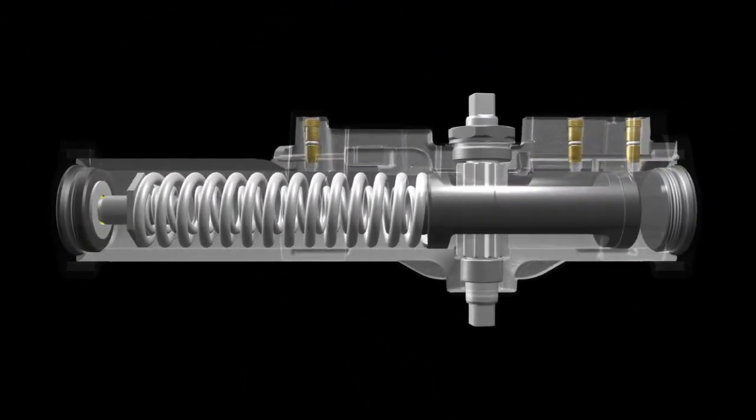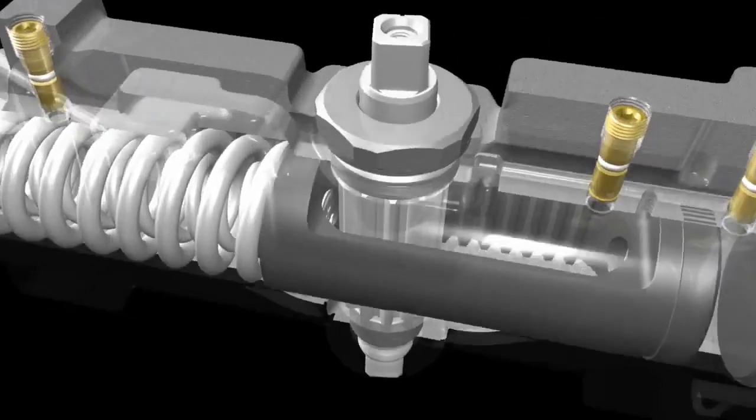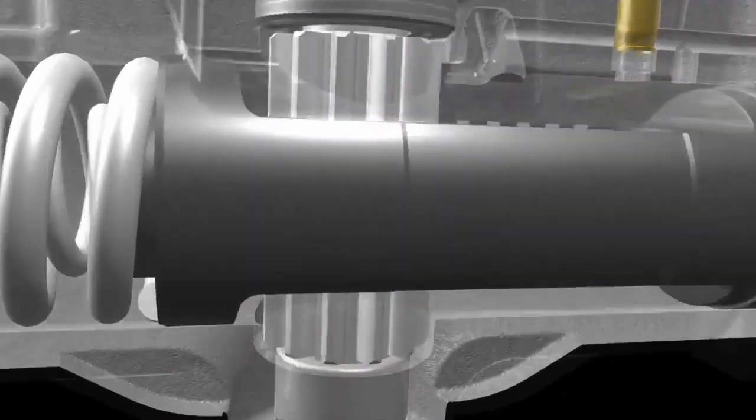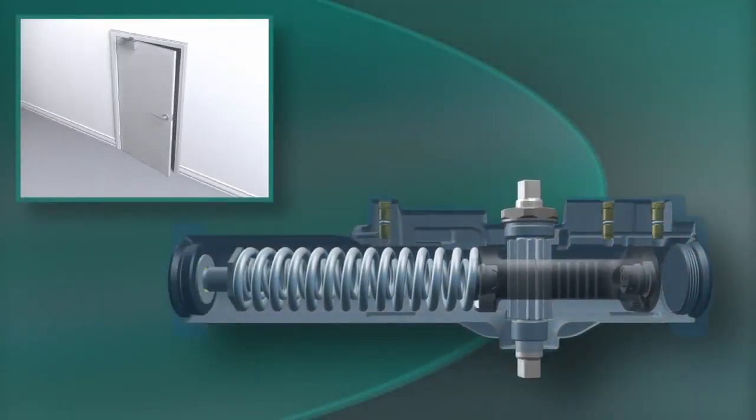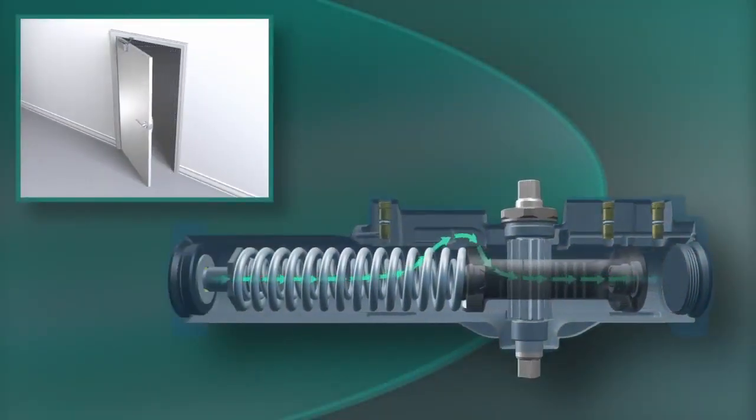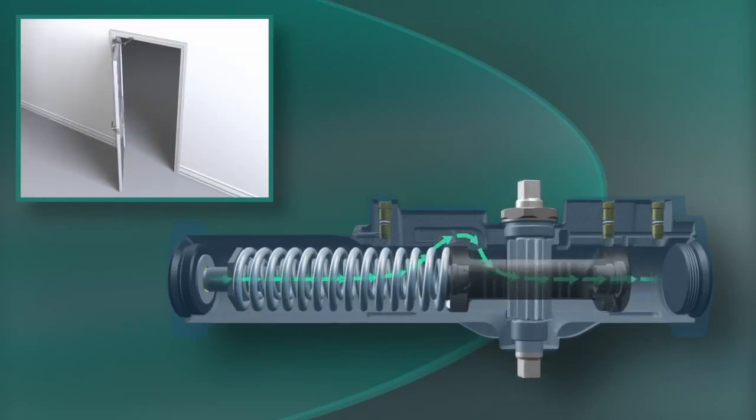Here's the basics. Each time the door is opened, the closer arm turns a pinion, which moves a piston inside the fluid-filled chamber. The speed of the piston is controlled by fluid passing from one side of the closer to the other. The valve controls the speed.